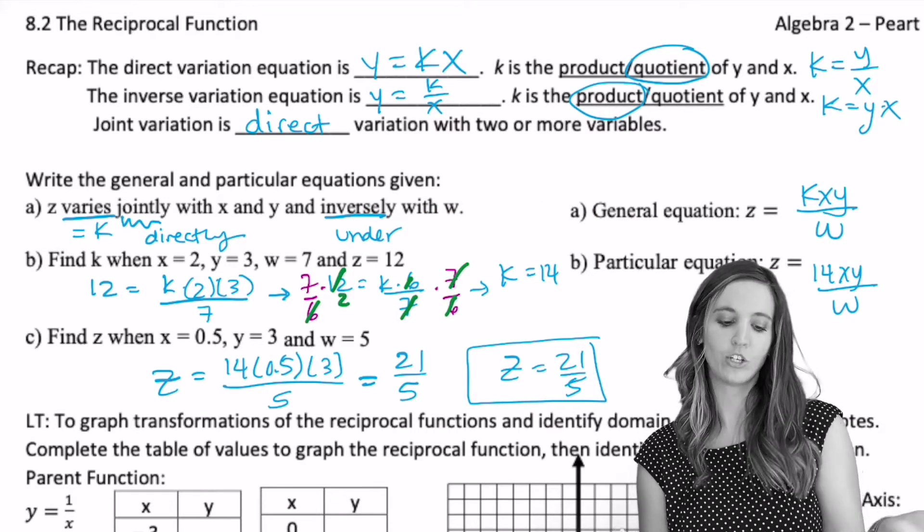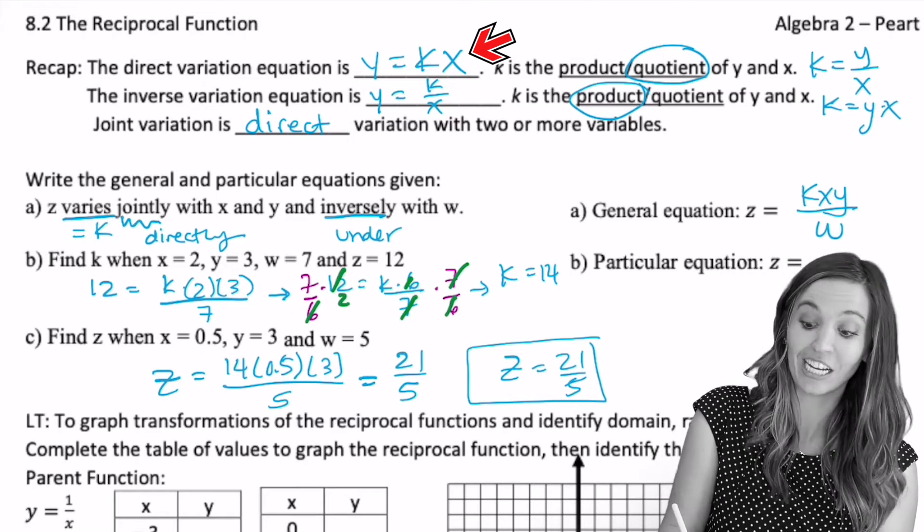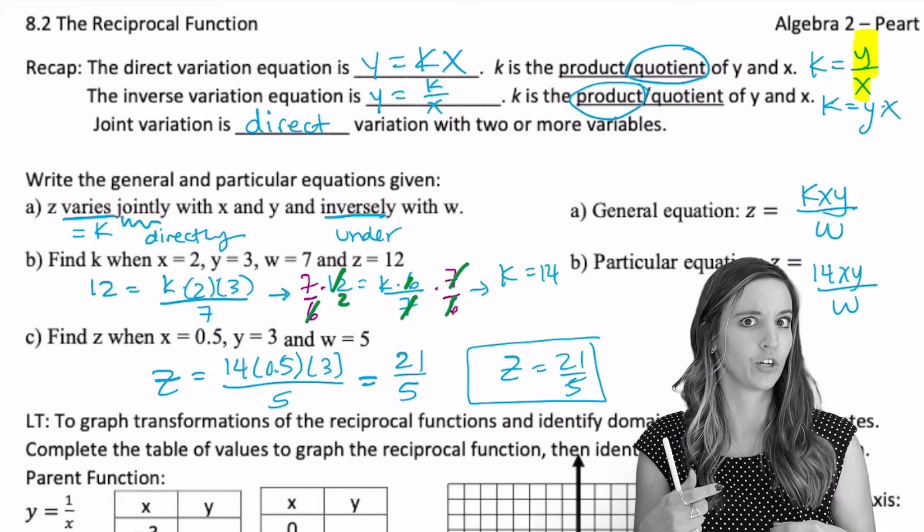Of course, we have our equation for direct variation, y equals k times x, which means we can find that constant variation k by dividing our y values by our x values, right? Because we solved for k.